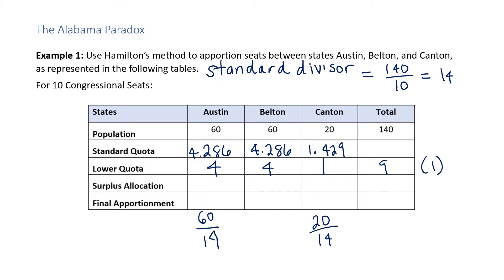The surplus allocation goes to the state with the highest residual — that is, the biggest fractional part — and in this instance it's Canton. So Canton gets that surplus allocation. The final apportionment: Austin gets 4, Belton gets 4, and Canton gets 2.